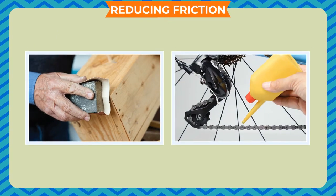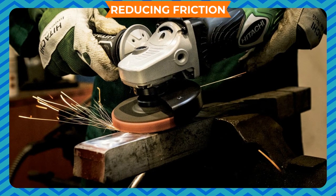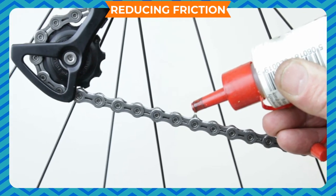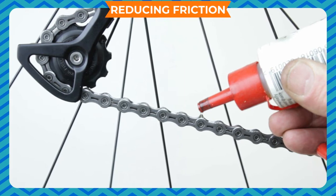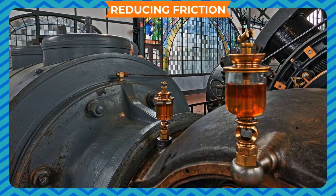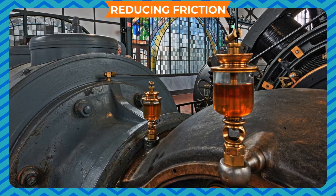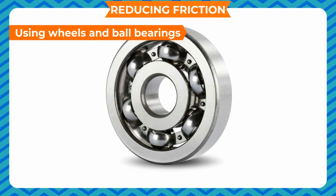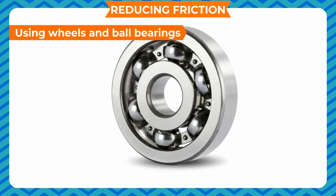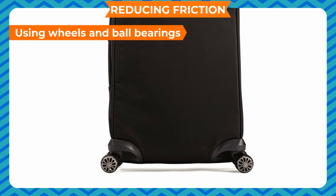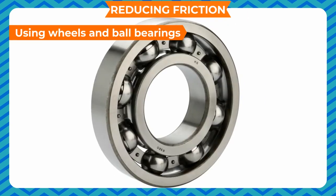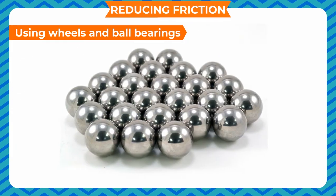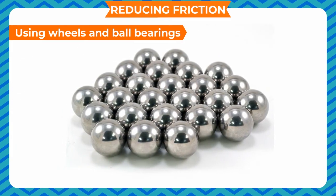The main cause of friction is the roughness of surfaces in contact. Thus, anything capable of reducing the roughness between surfaces can reduce friction. Some techniques include using wheels and ball bearings — vehicles and luggage have wheels to facilitate motion. Since rolling friction is less than sliding friction, ball bearings are used in machine parts to reduce friction.